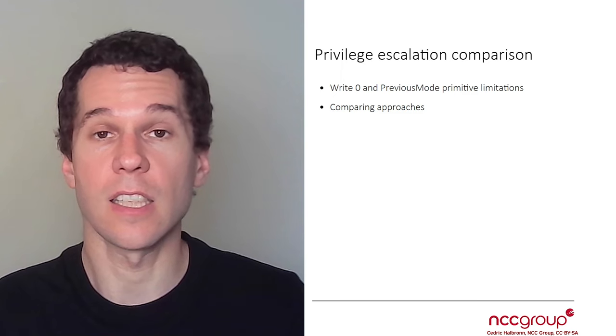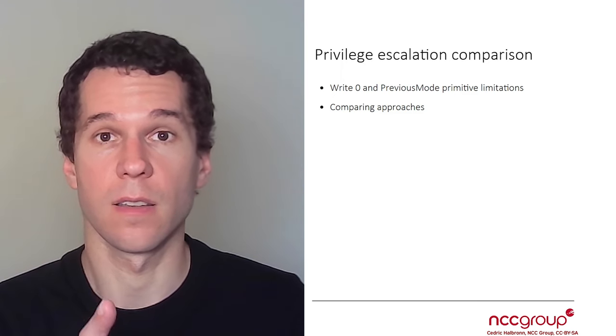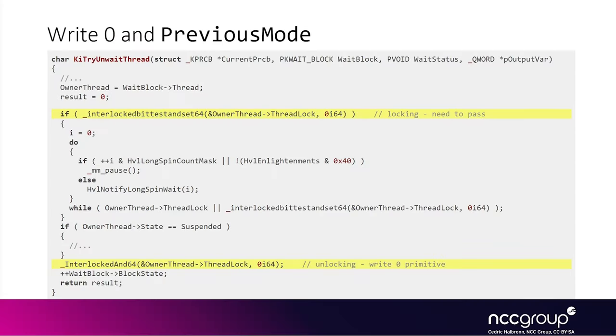Okay, let's get started. Let's analyze one more time the function that gives us the write0 primitive — the ki_try_wait_thread function.